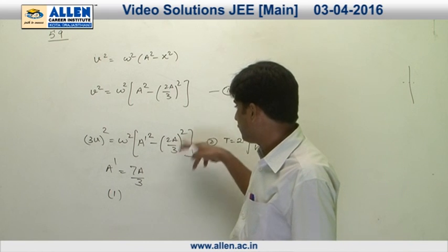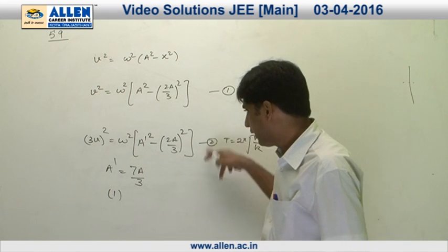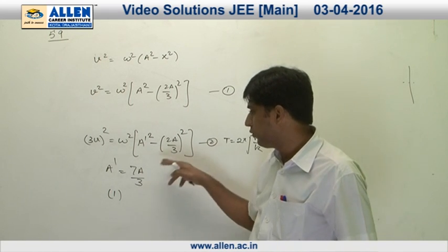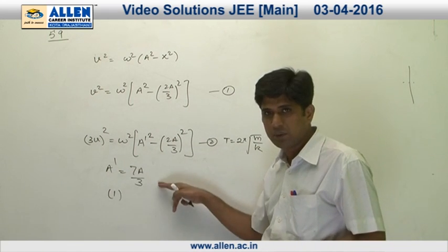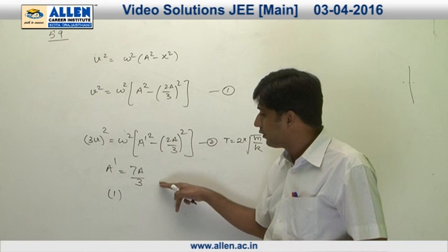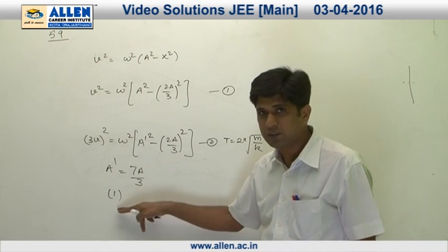On solving these two equations, we get the value of a', that is a' = 7a/3. Therefore, the correct answer is 1.